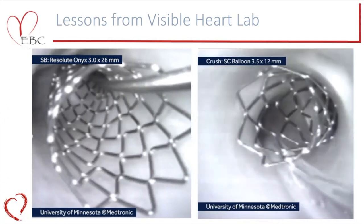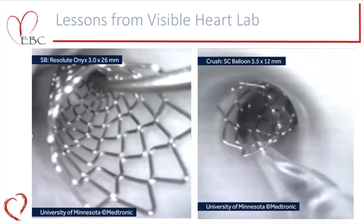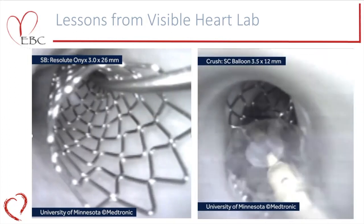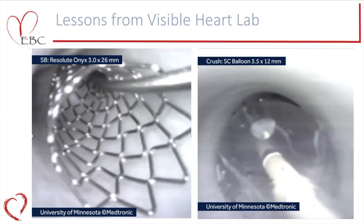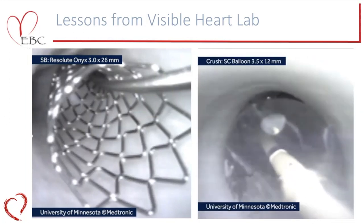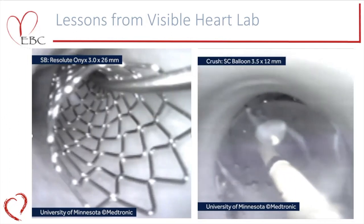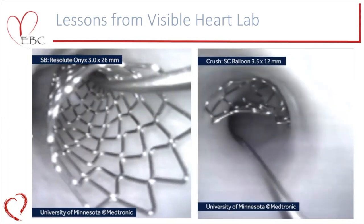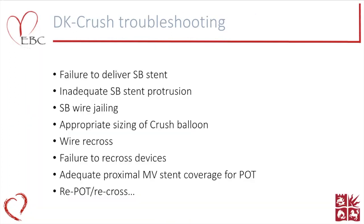Here we see a 3.5mm balloon crushing a 3.0mm side branch stent, and when that balloon deflates we see quite aggressive recoil of the device — and we can clearly understand how we might be able to rewire down the true lumen of the stent.